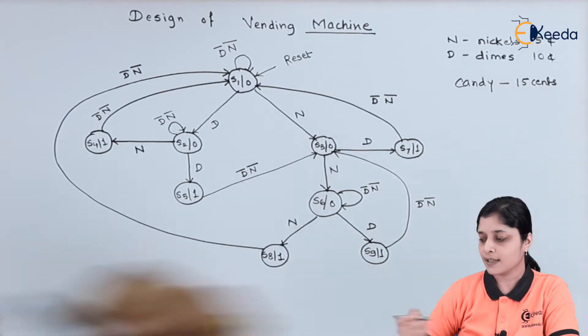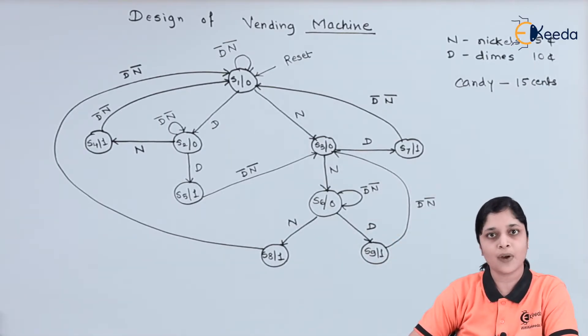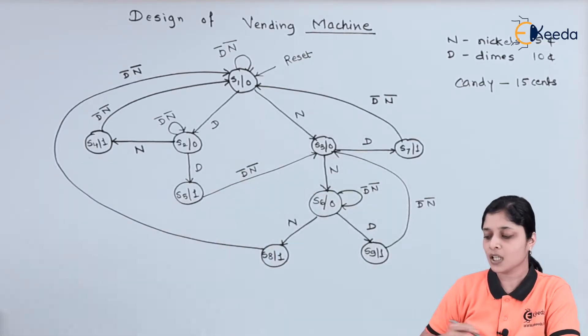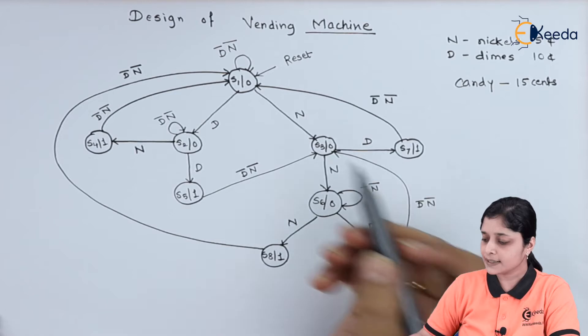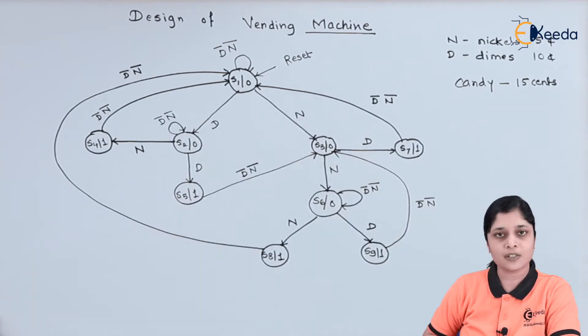For these applications, you have to design the vending machines according to the state diagrams. We will design the state diagram. Initially, S1 is the first state. This is the reset state when nothing is inserted.